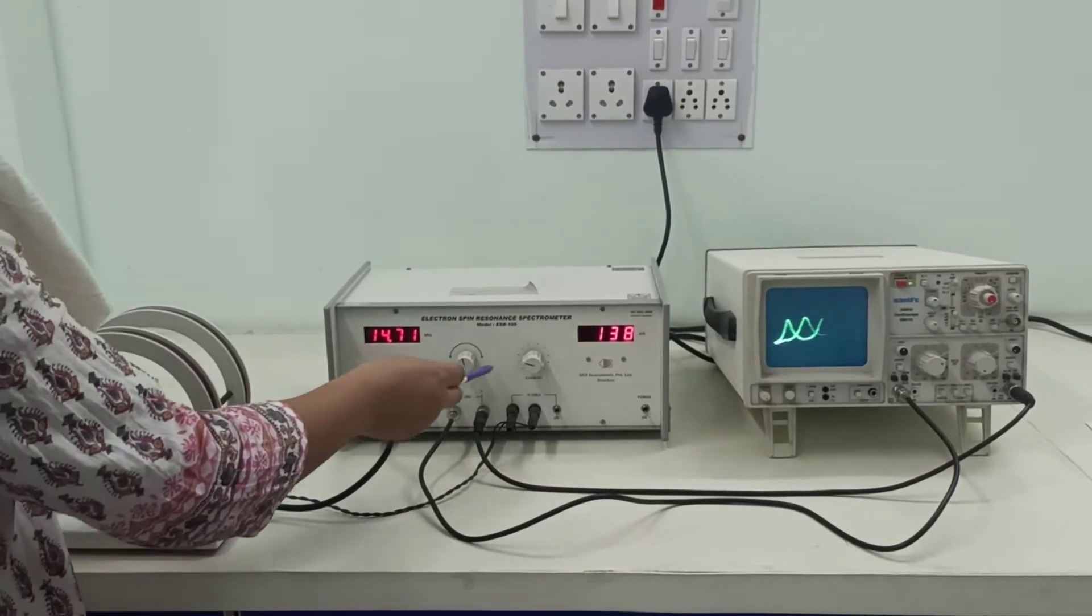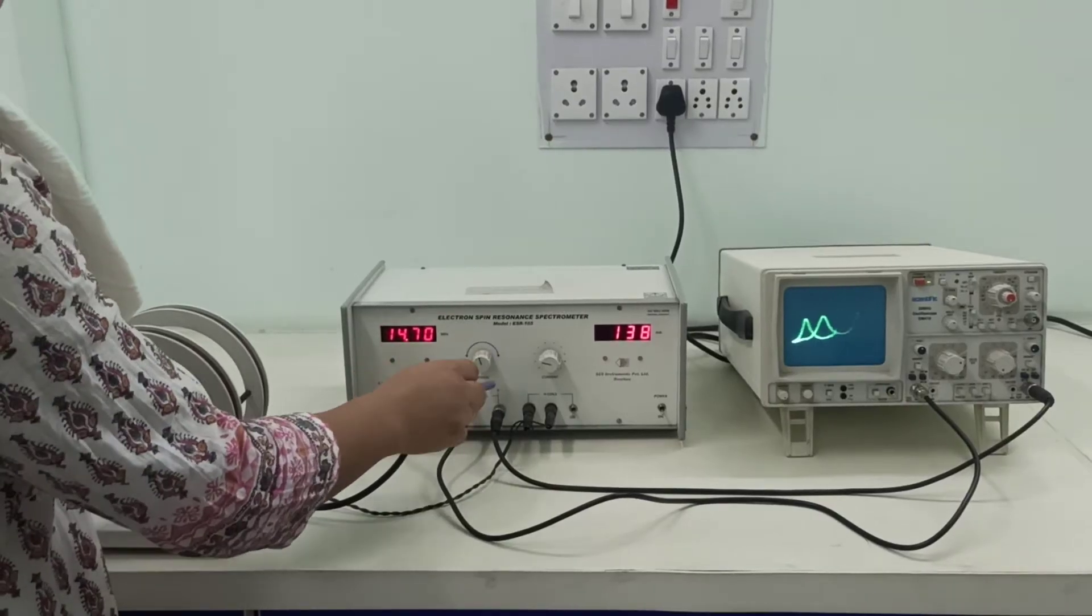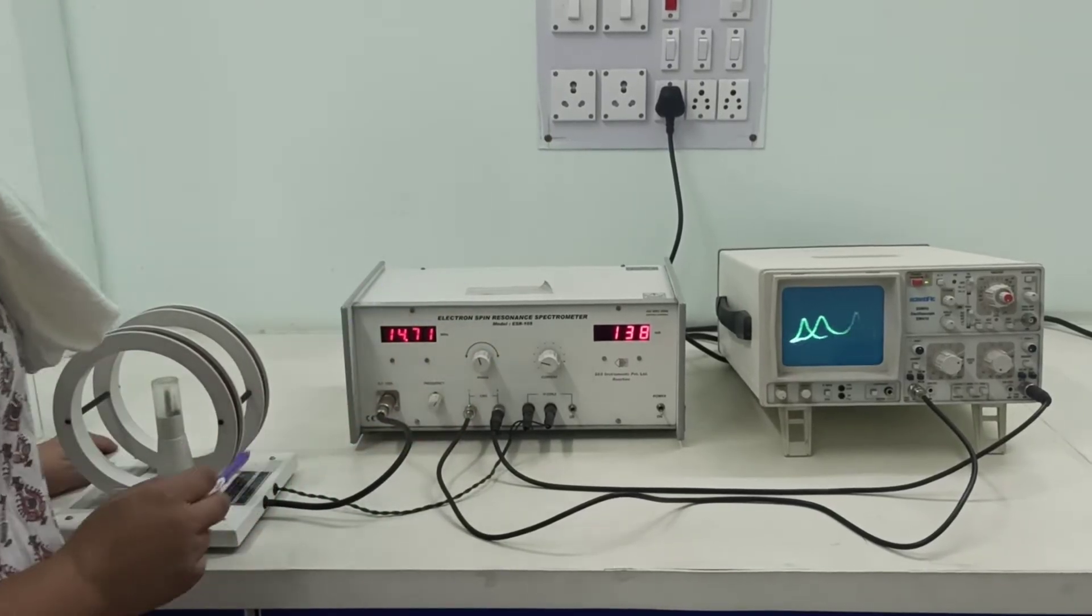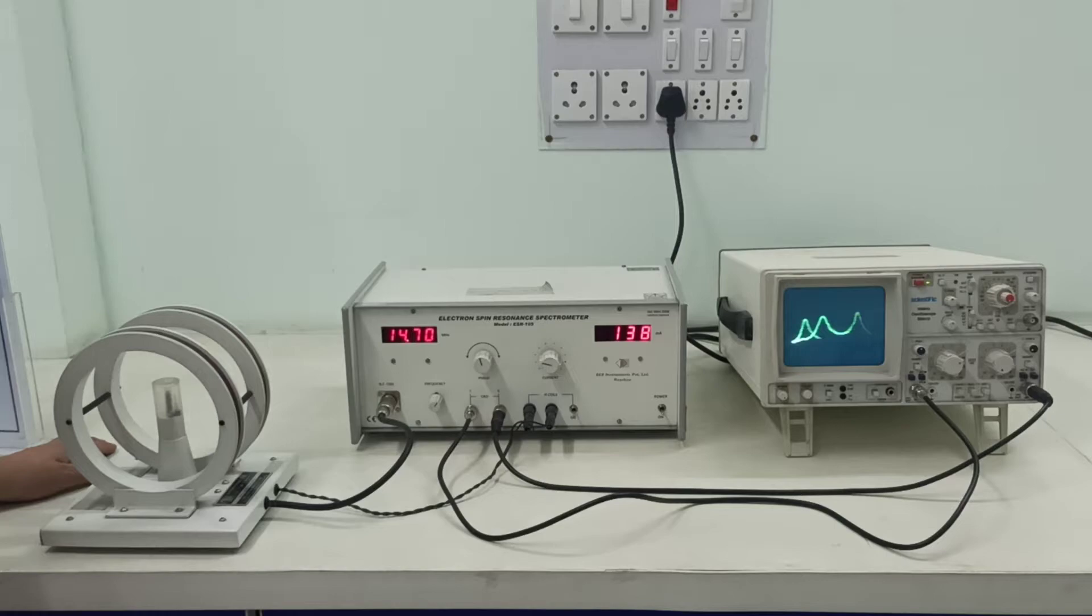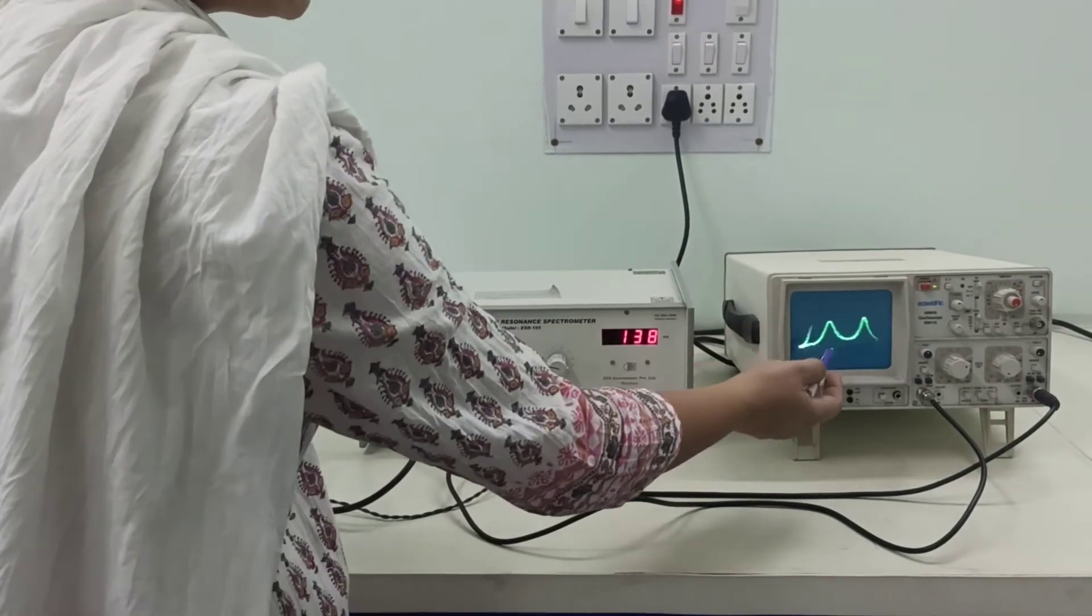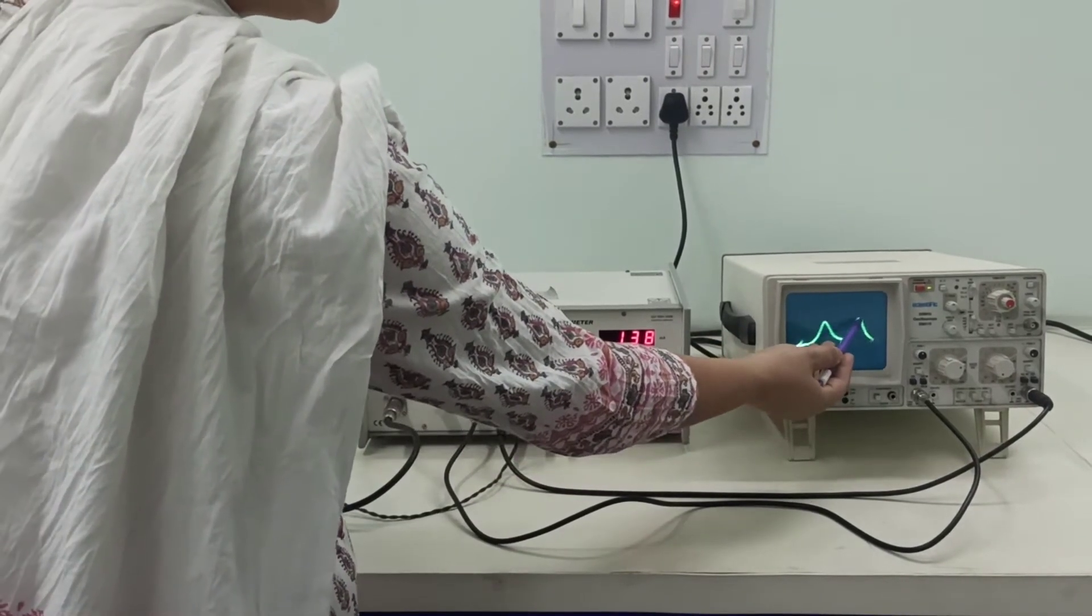And one important thing is there is something called a phase adjuster. We will be making use of this as well. So what we need to do in our experiment is, this is the kind of output you will be getting. You see four different peaks here.